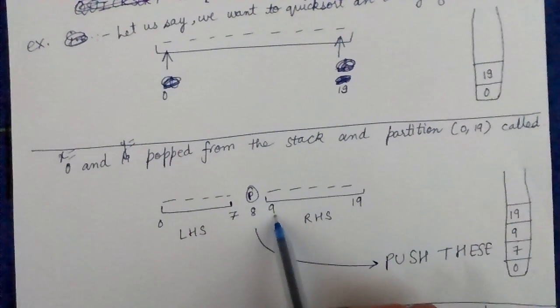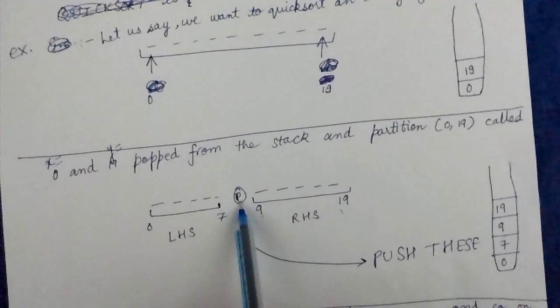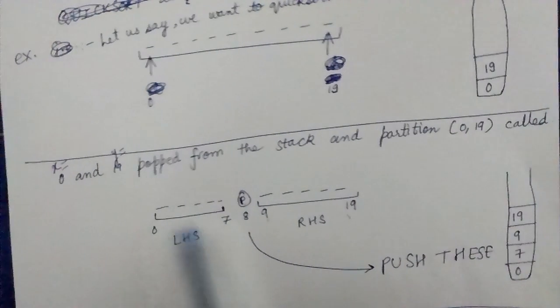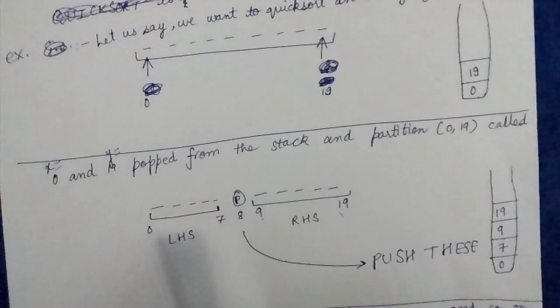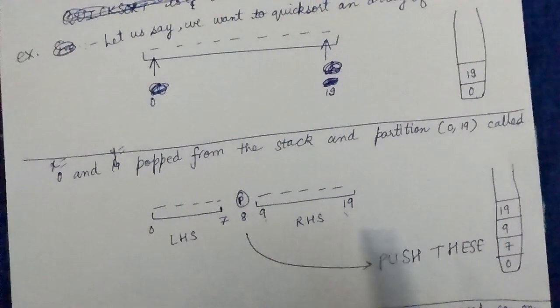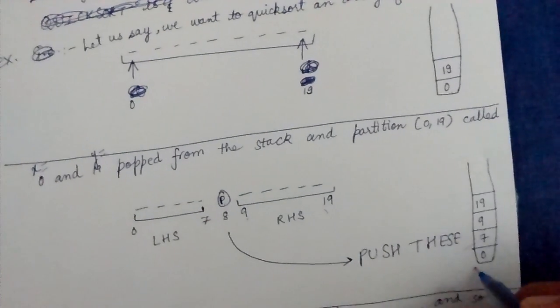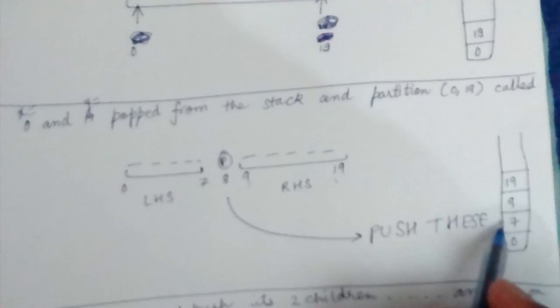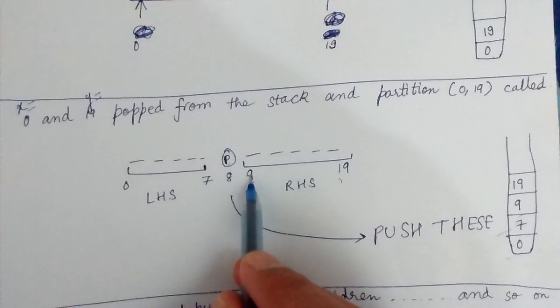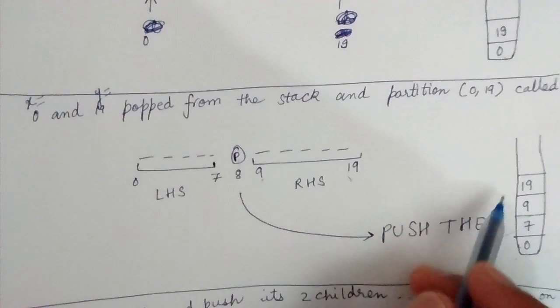Now element 8 is in its correct position. We want to sort 0 to 7 and 9 to 19, these two subarrays. So we insert that information into the stack. We push 0 and 7 which indicates we want to sort the array from 0 to 7, and then we push 9 and 19 which indicates we want to sort this array from 9 to 19.